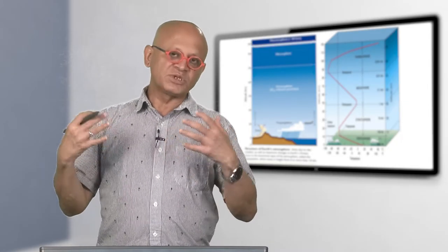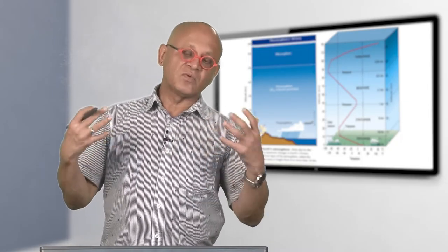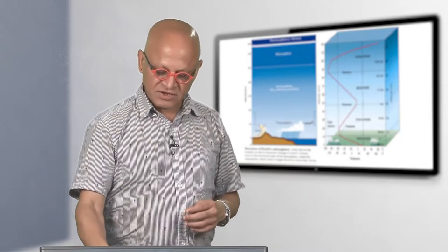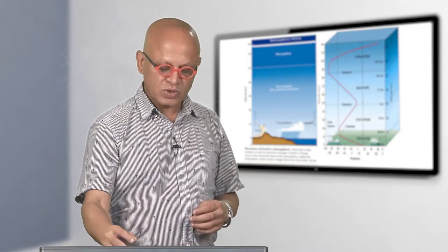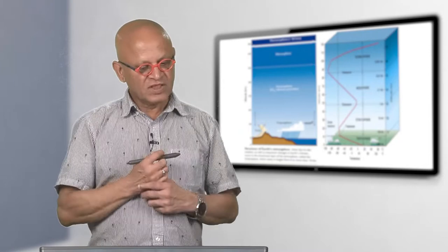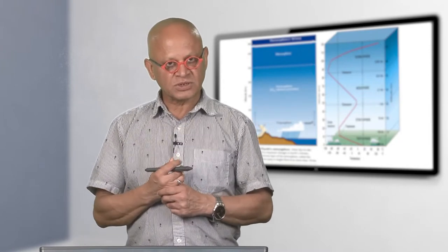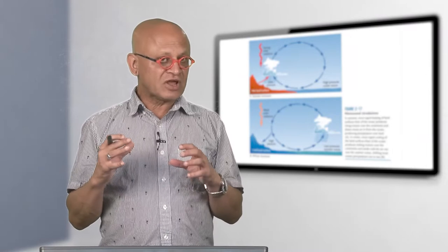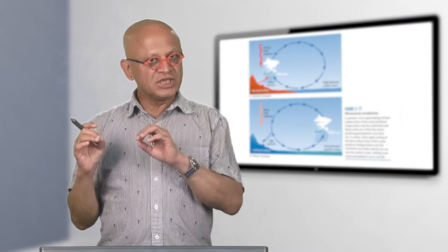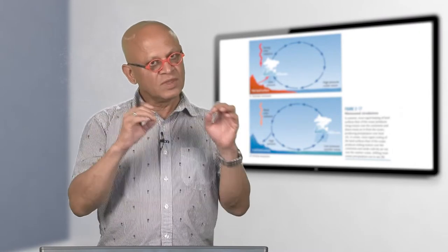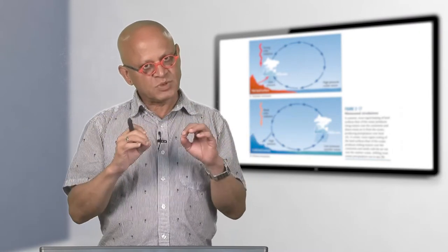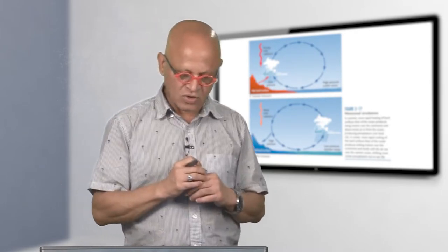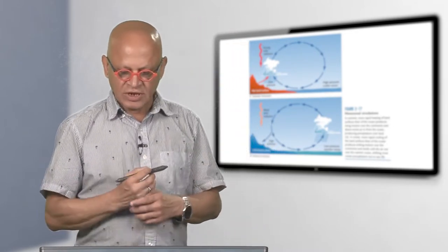Changes in tropopause height will affect how strong the winds are, how much it rains, where it rains, and how it rains. There is a separate module with full details of the vertical structure. We are now connecting each of these concepts back to global warming, because every one of them will keep playing a role in global warming and climate change.